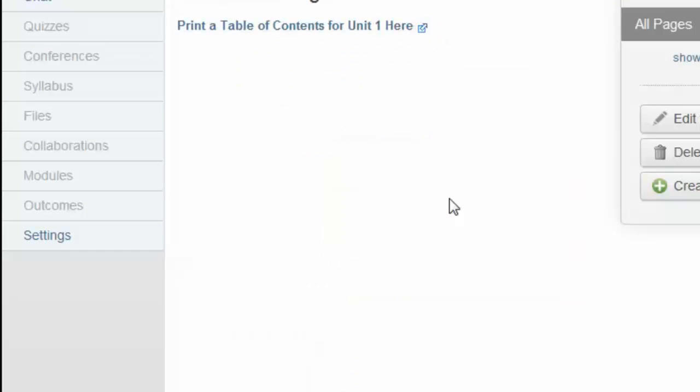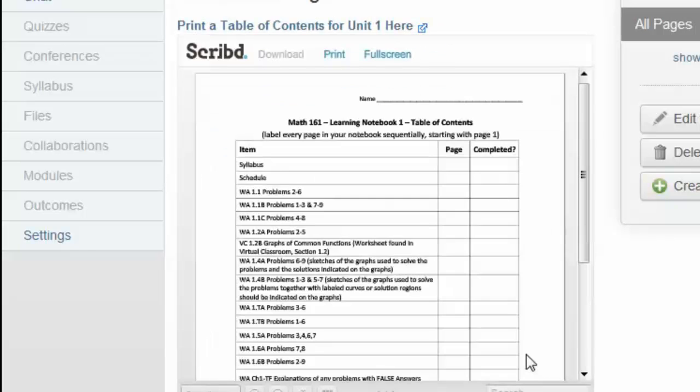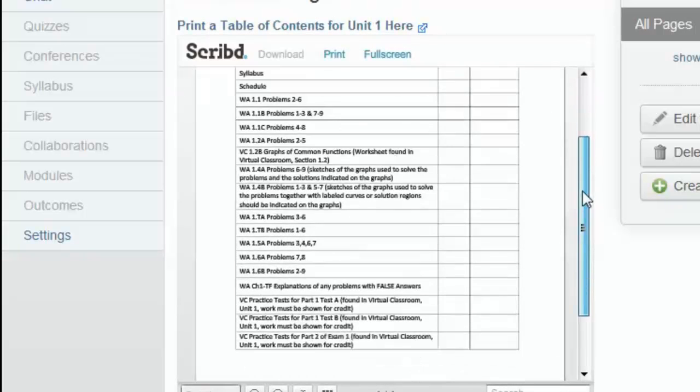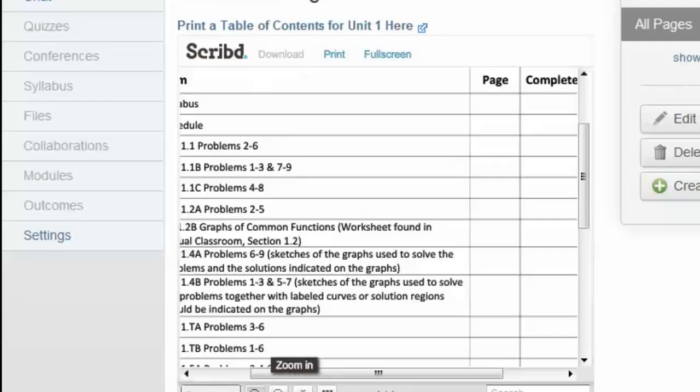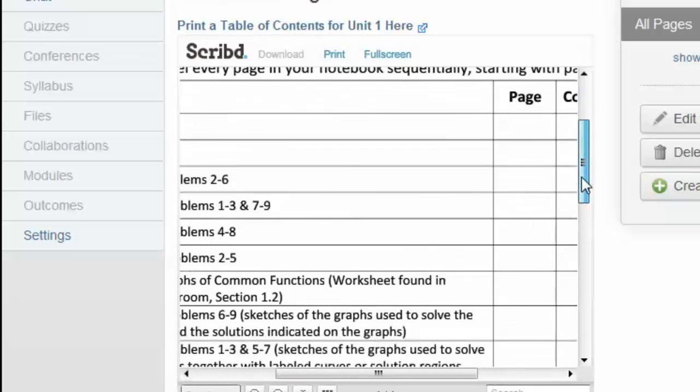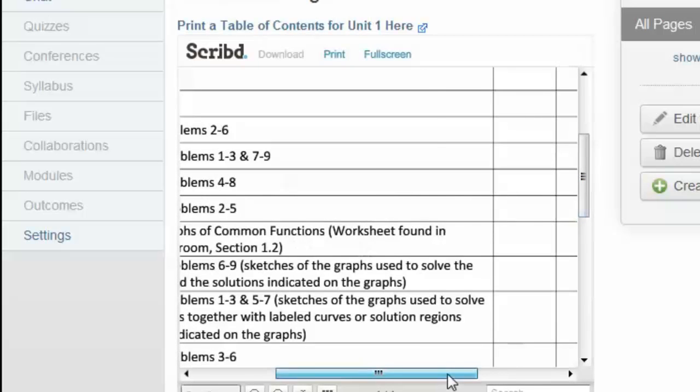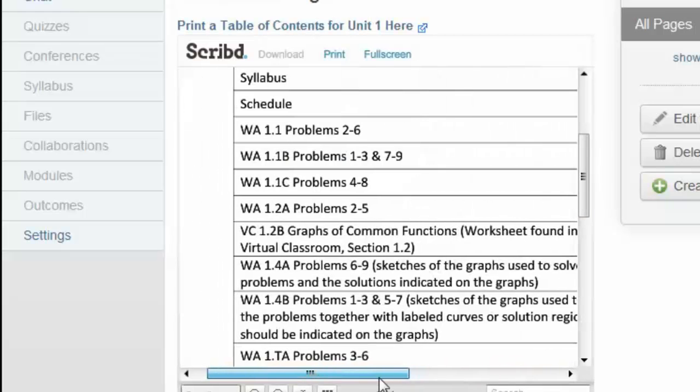Or they can print a table of contents right from Canvas and just make sure they have everything in there. There's also a little checklist in here so that they can check off the assignments as they complete them and write down what page they're on so that they can easily find them.